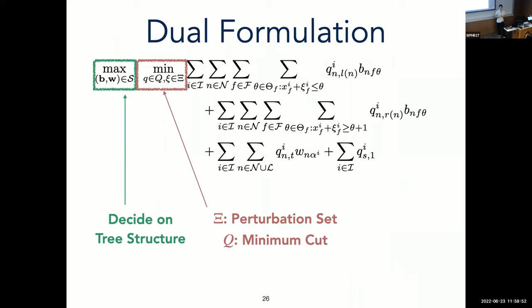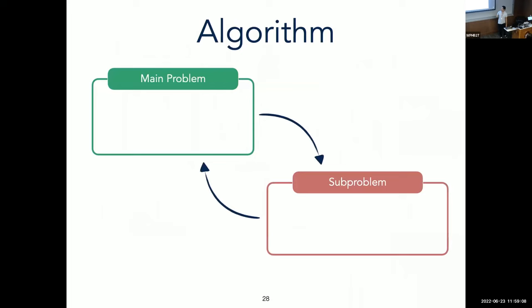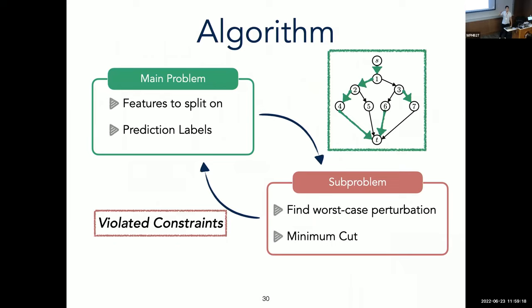Another thing that you can notice about this formulation is that there is some inherent decomposable structure. And so we can create a tailored Benders decomposition algorithm that can solve this problem to optimality. So this is what the algorithm will look like. In our main problem, we'll decide which the tree structure. And that will decide which features to split on and which labels to predict. Then in our subproblem, we find a worst-case perturbation and a set of minimum cuts that we can add as violated constraints back into our master problem. And then we reiterate until we reach optimality. And so this algorithm can be implemented within existing off-the-shelf MIP solvers.